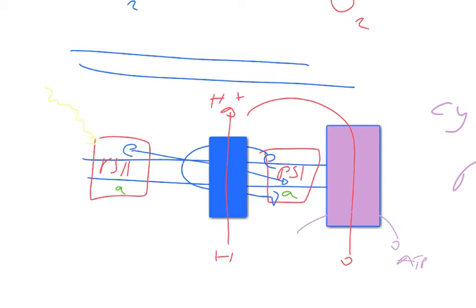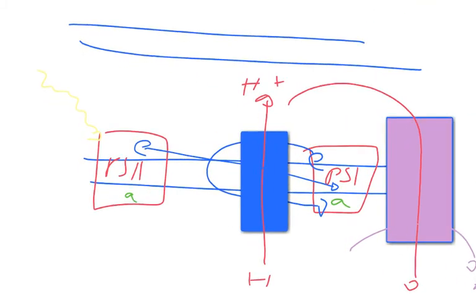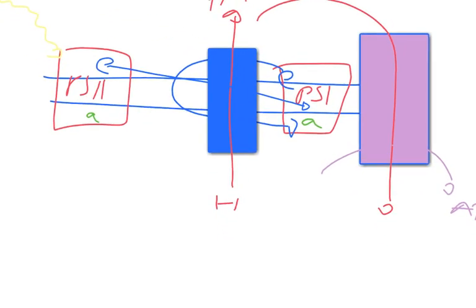At the end of this, though, the electron that's been moved from photosystem 2 to photosystem 1 ends up doing something different. It gets picked up by a big carrier blob molecule called NADP.